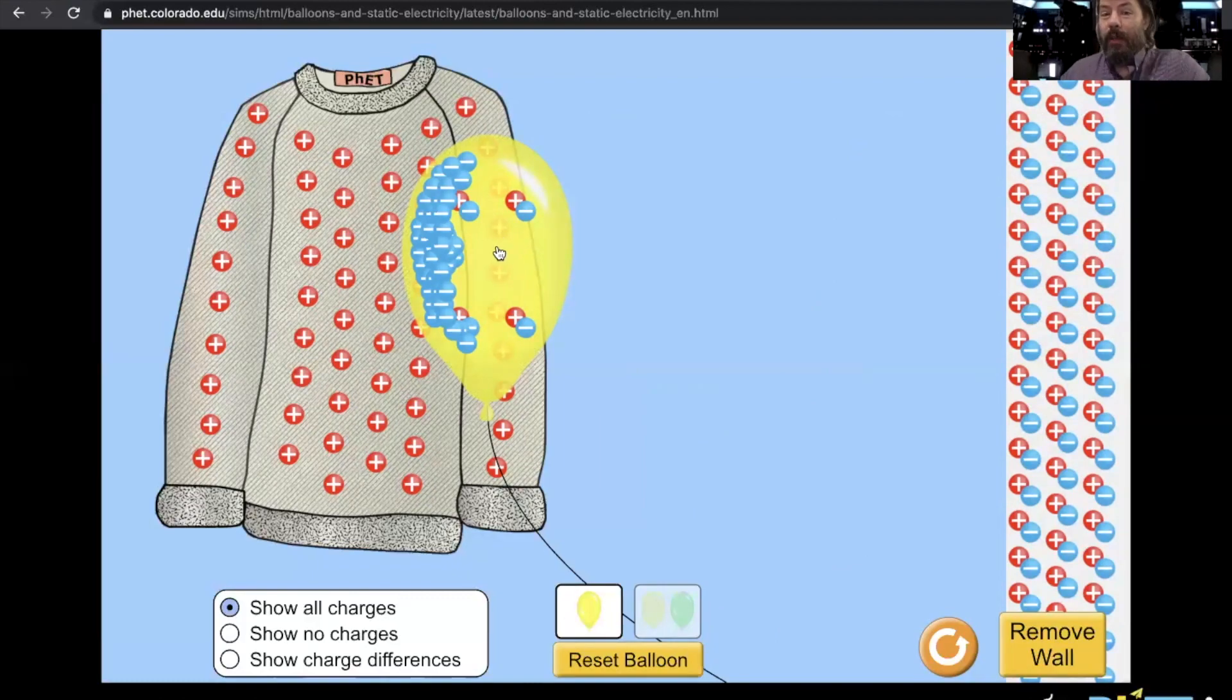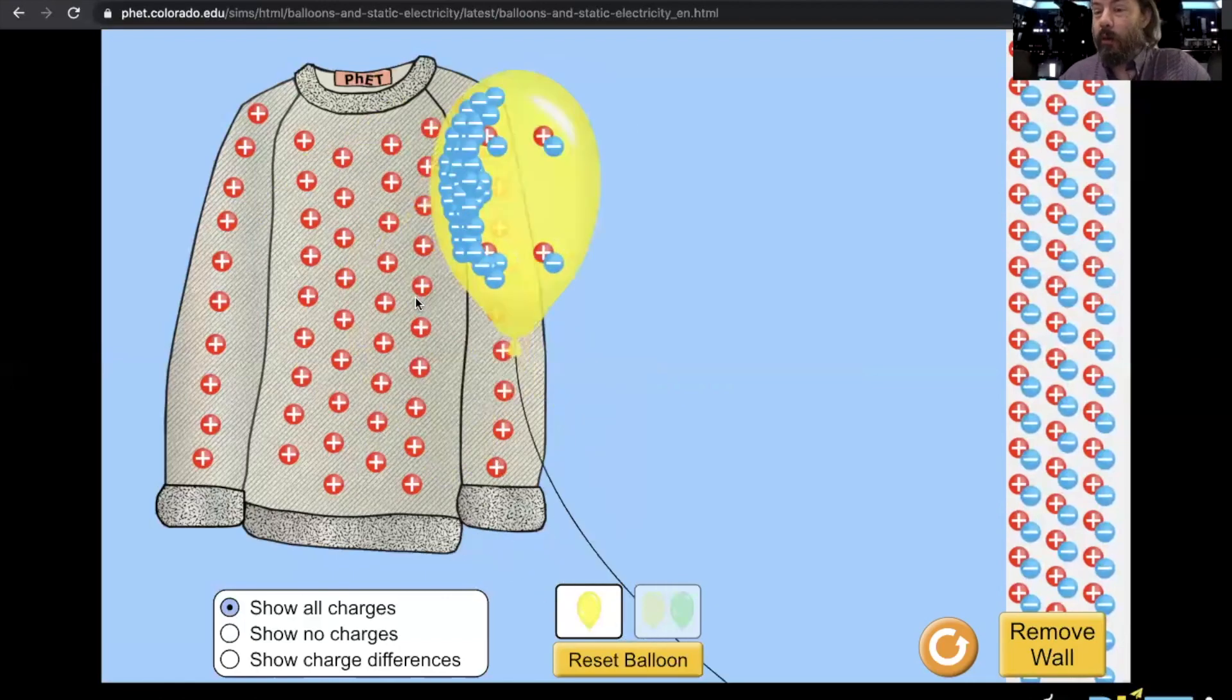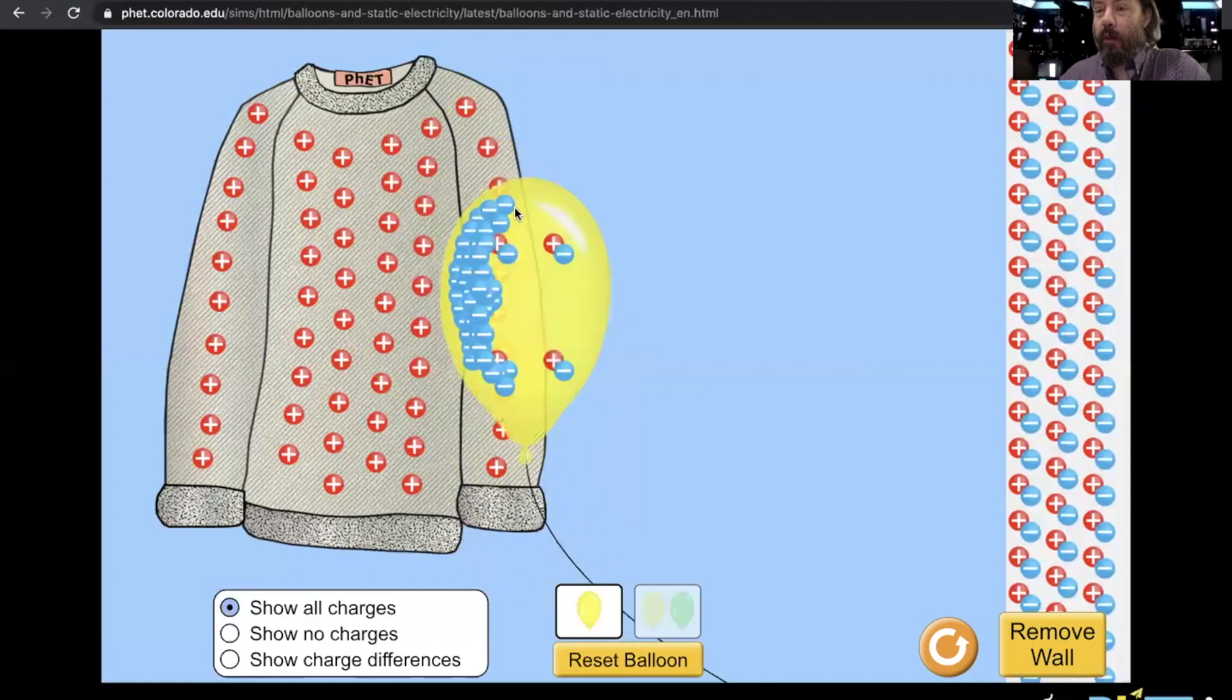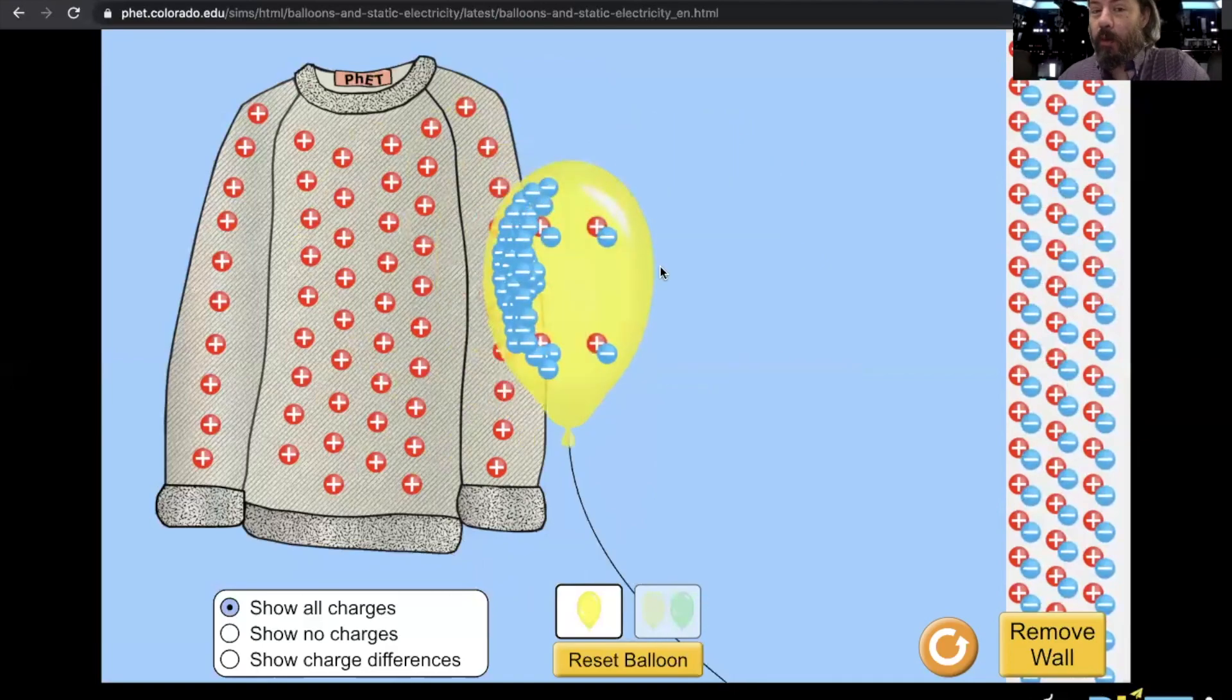So there's a couple things happening here. So the most important thing is the balloon gets its charge because we rubbed it on the sweater through friction, through work, charge is transferred from the sweater to the balloon. So electrons are transferred from the sweater to the balloon.